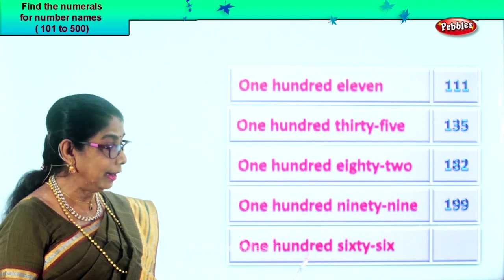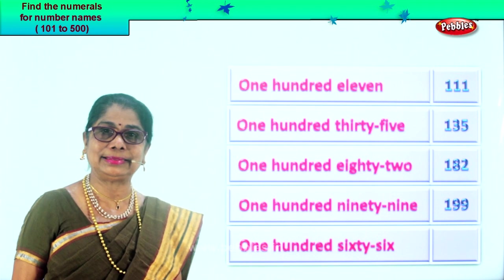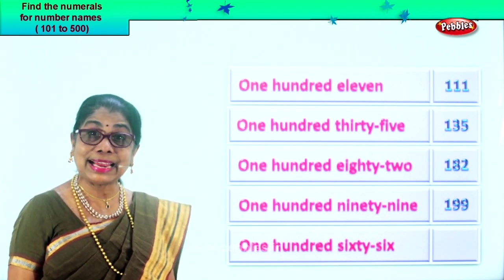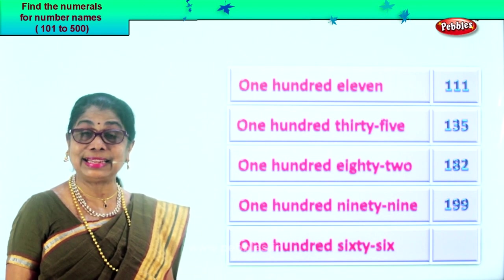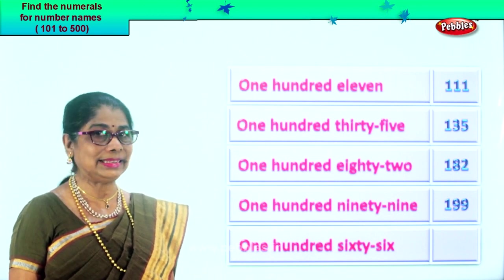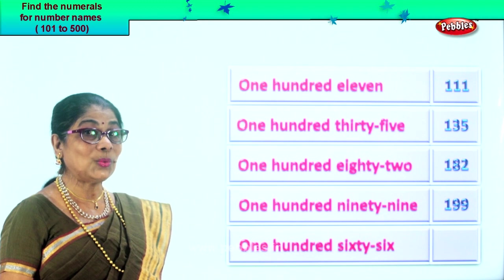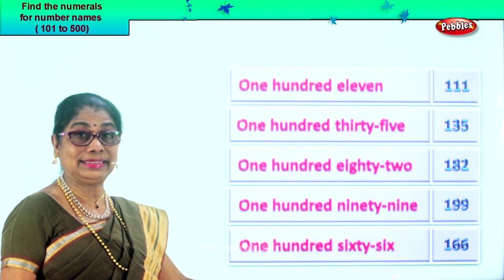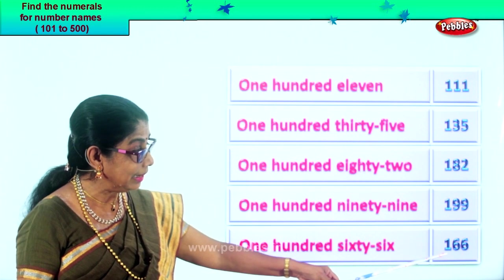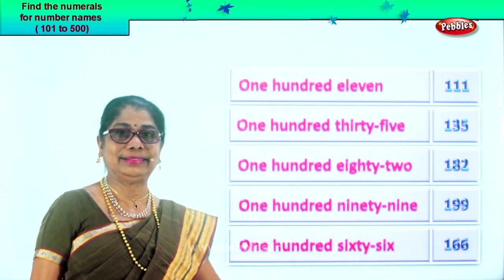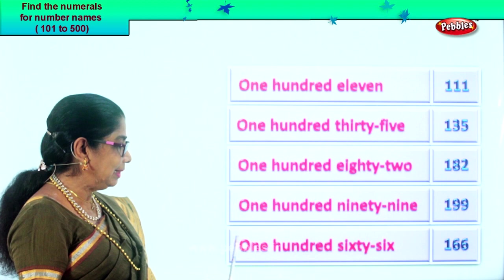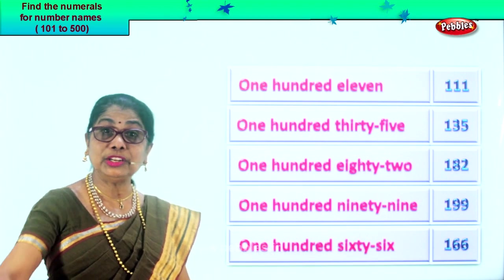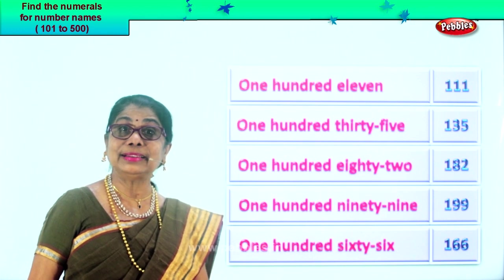Let's take the last one. One hundred sixty-six. One in the hundredth place. Sixty-six — six in the tens place, six in the ones place. So one hundred sixty-six. Reading the number name and the numeral should be the same. Very good. Did you enjoy the exercise?